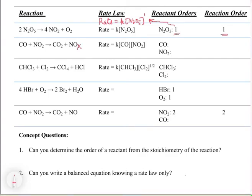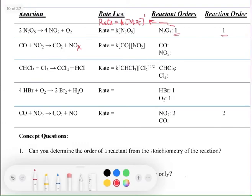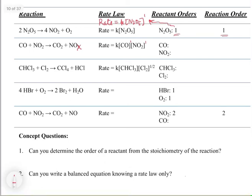Next, we have CO + NO₂ (note: there's a small typo in the slide — the product should just be NO). The general rate equation is: rate = k[CO]^M[NO₂]^N. The rate law is given, and since there are no superscripts written, we can assume the orders are both 1. So M = 1 and N = 1. The overall reaction order is M + N = 2, making this a second-order reaction.